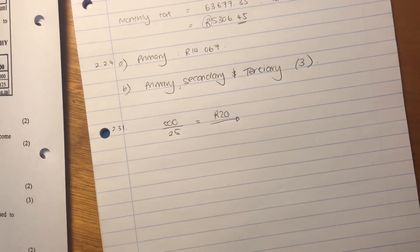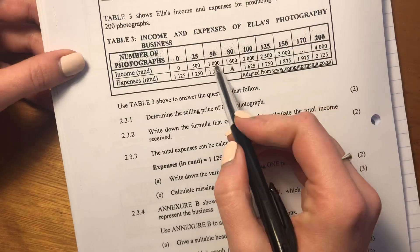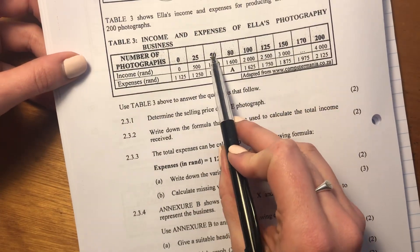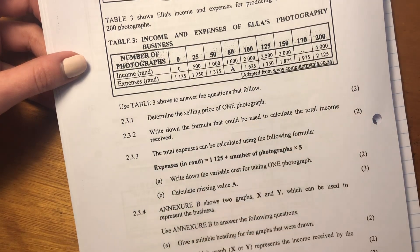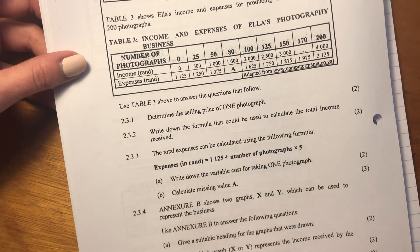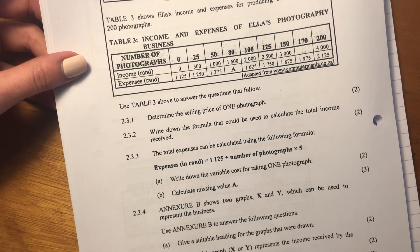Again, remember your currency. It actually represents a monetary amount. So it'll be 20 rand. You could literally say 1,000 divided by 50. You could say any of these incomes divided by the number of photographs, and you'll get to 20. You don't have to do everything the way that I do it. I just show you a way of doing it.